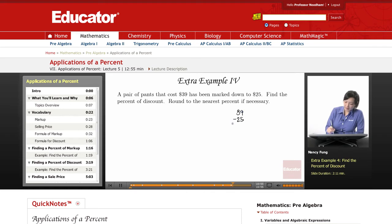So $39 minus $25, that's going to be $4 and $1. So this item has been marked down $14.